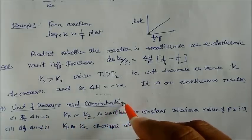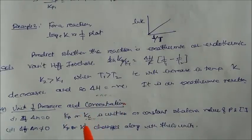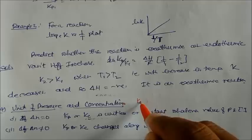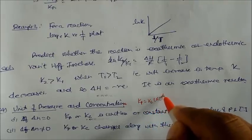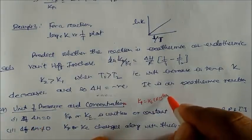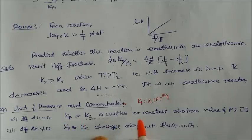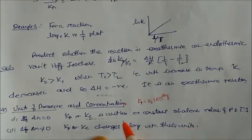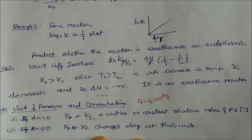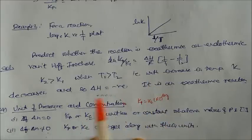Another factor affecting the equilibrium constant is the unit of pressure and concentration. In the Kp–Kc relationship — Kp = Kc(RT)^Δn — if Δn = 0, then Kp = Kc and both are unitless. If Δn ≠ 0, it can be positive or negative, and Kc or Kp will change along with their units. This was covered in earlier topics on characteristics of equilibrium constants. For numericals on the Kp–Kc relationship, please go through and practice those problems in the numerical section.